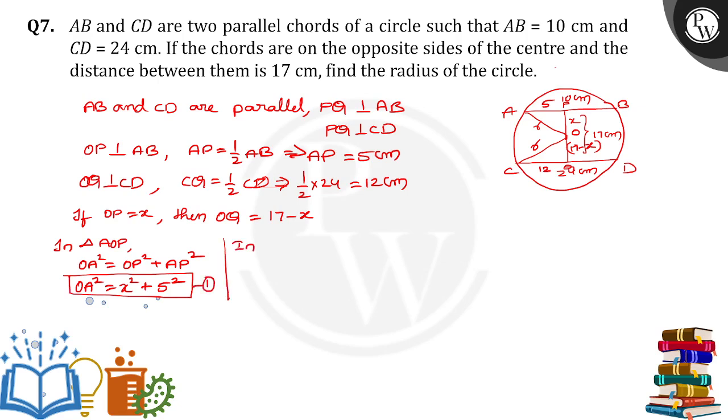In triangle COQ, OC square is equal to CQ square plus OQ square. OC square is equal to 12 square plus 17 minus X whole square. Take it as equation number 2.